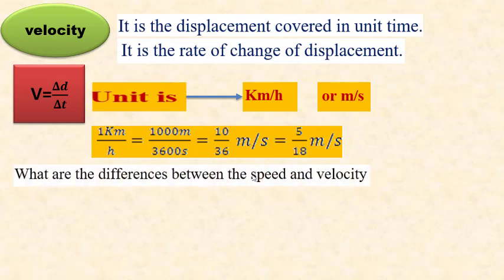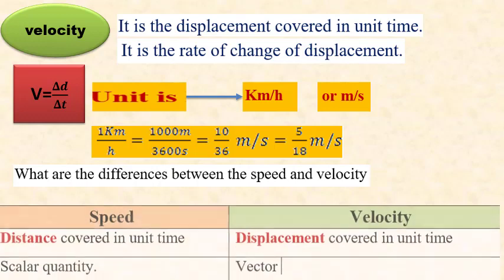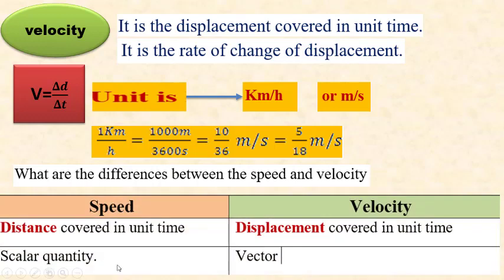The question now is: what is the difference between speed and velocity? Speed is the distance covered by a moving object in a unit of time, so it is a scalar physical quantity. While velocity is the displacement covered by the object in a unit of time, so velocity is a vector.